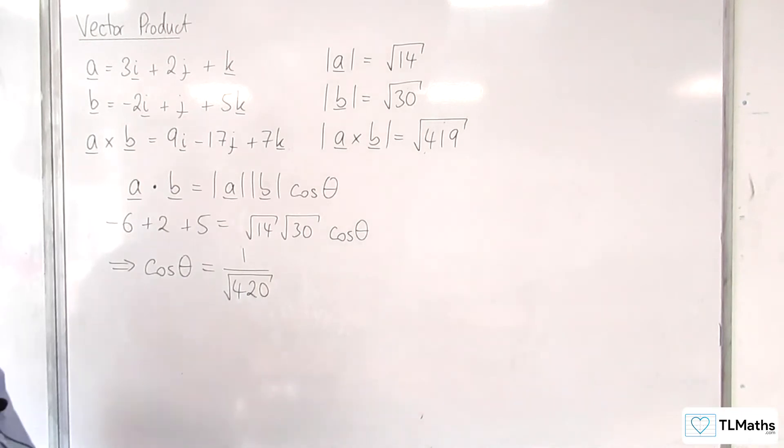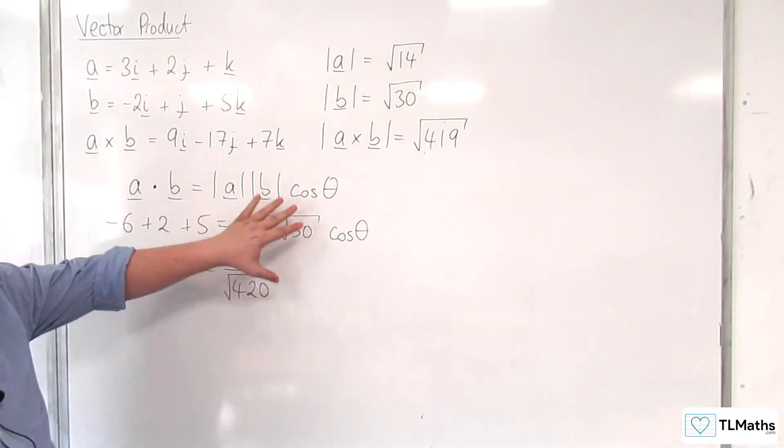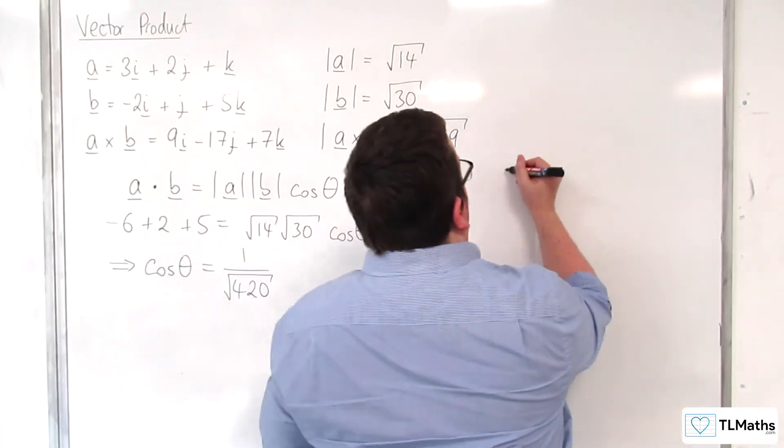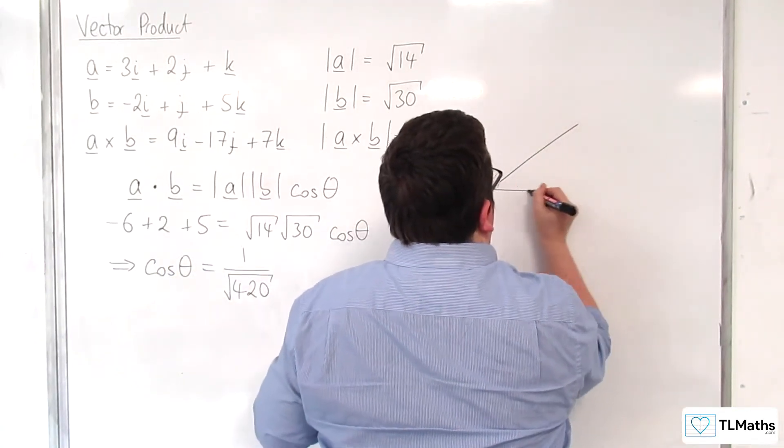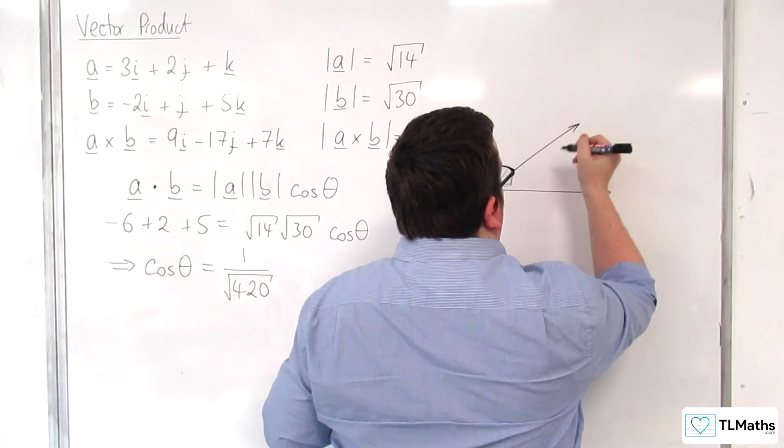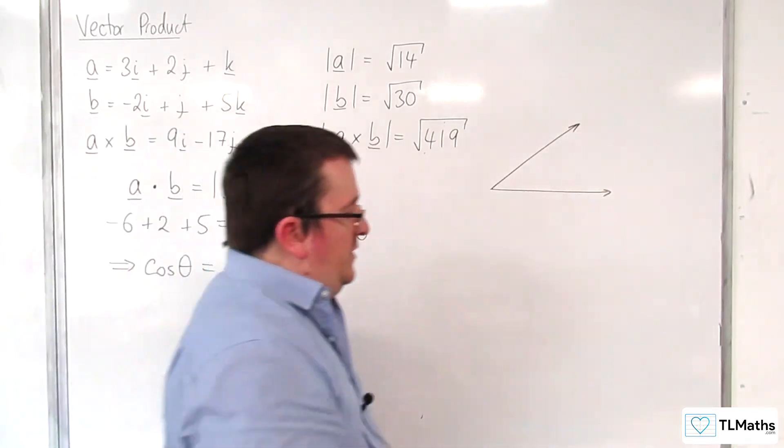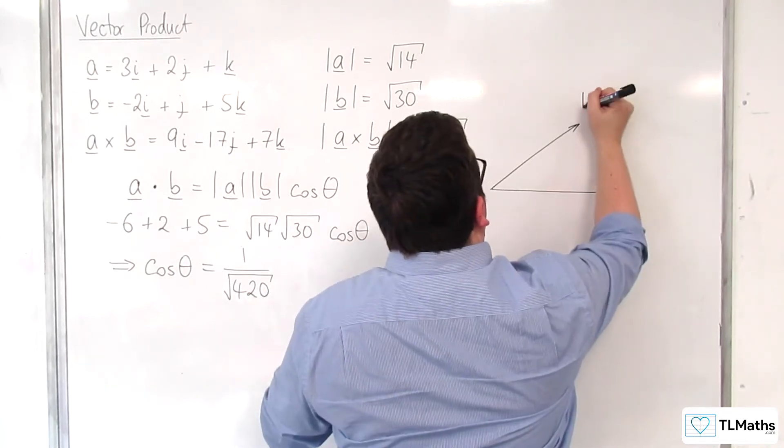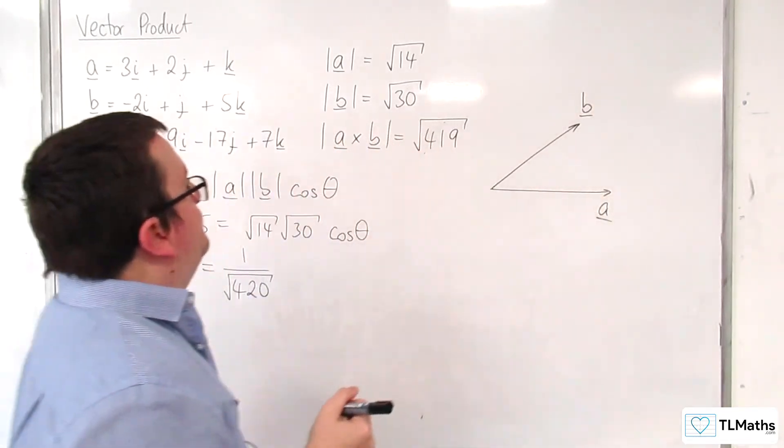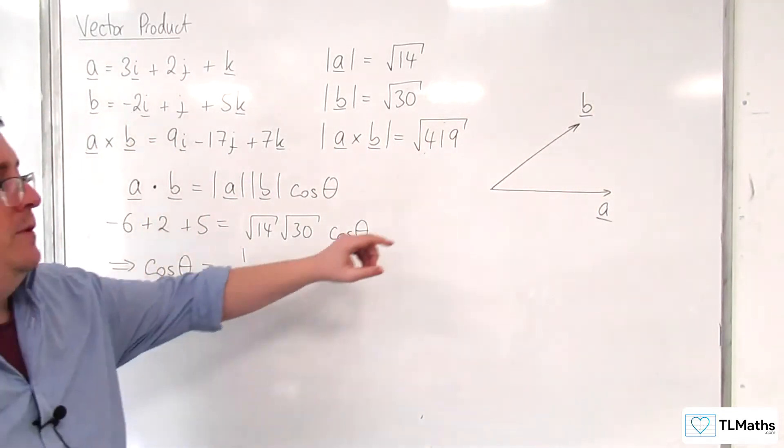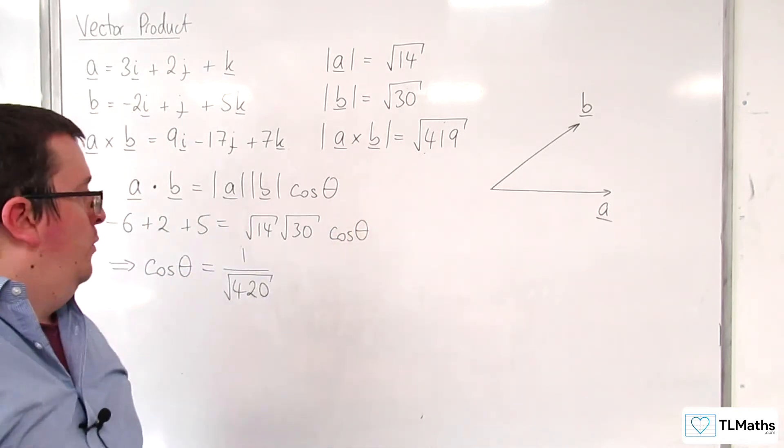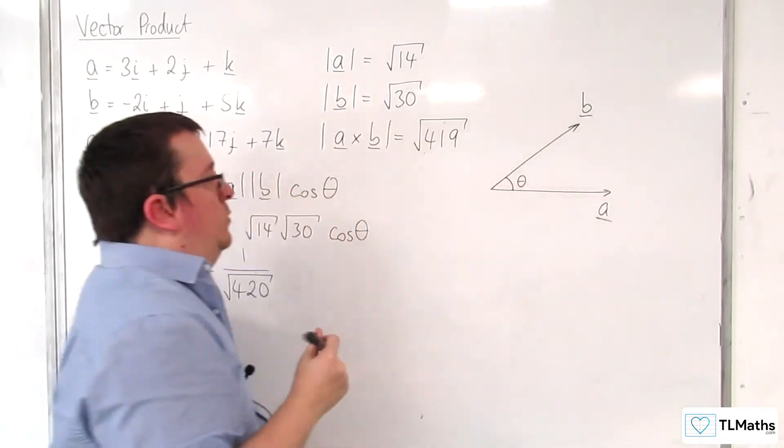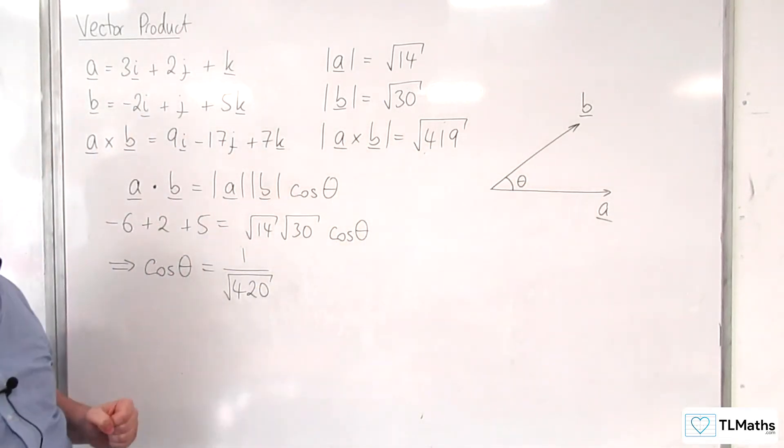So, let's draw a diagram to kind of just visually represent what we're looking at here. We've got these two vectors, A and B, in 3D. I've just centred them as if they're at the same point. And we know that theta is this angle here, the angle between them.